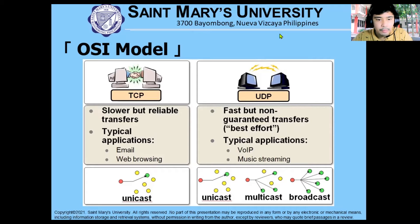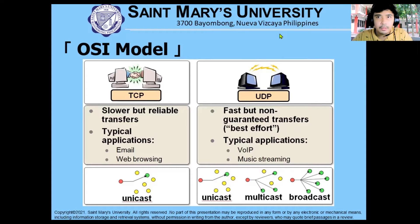Similarly, for the web browsing concept: when we try to browse a website and search for a certain keyword — let's say 'cat' — and the response shows a different animal, that communication is not reliable. That's what we want to avoid, and that's the concept under TCP.